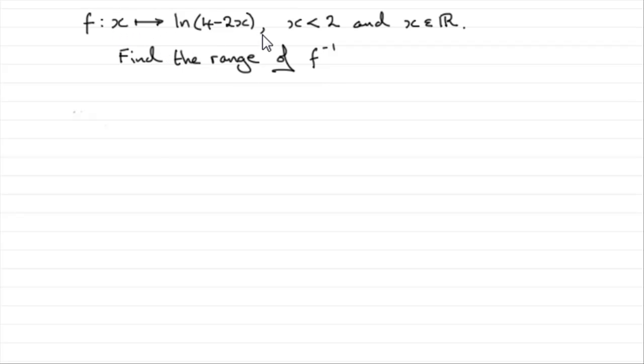So for this answer what we've basically got is that the range of f to the minus 1 of x is that f to the minus 1 of x is less than 2, the same as the domain here of f of x. So why is this the case?